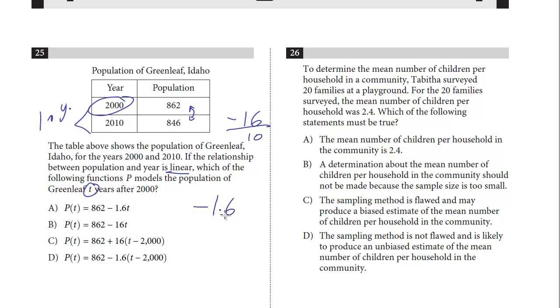So we divide this by 10, and we get negative 1.6. This is the annual decline. Really this is the slope that this town, Greenleaf, can expect every year. And we need to get the linear equation. What about the y-intercept? What's the starting amount?